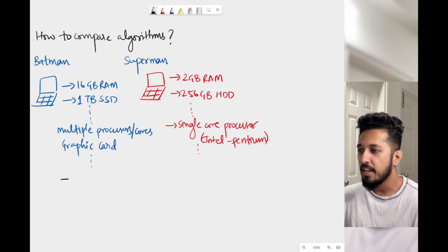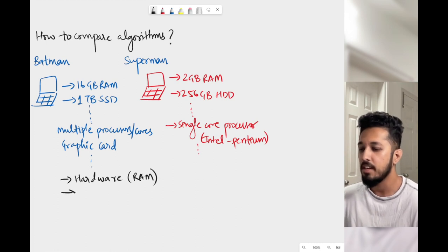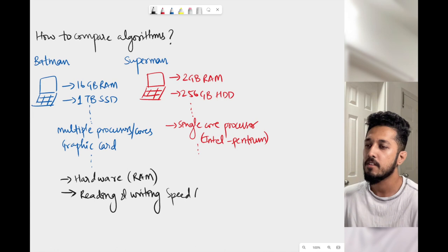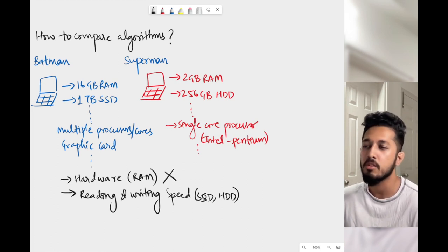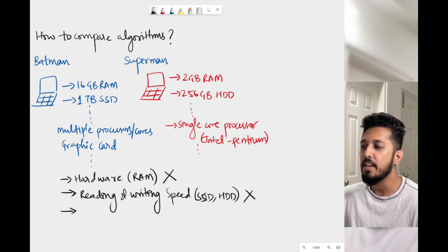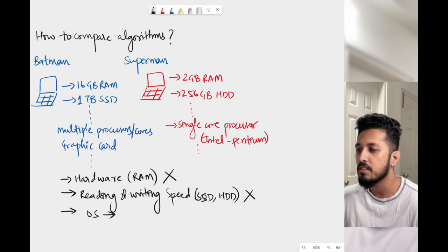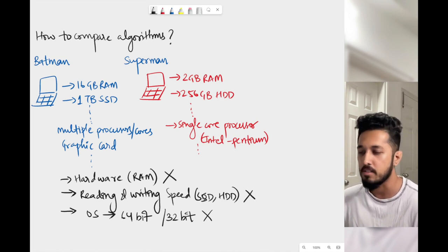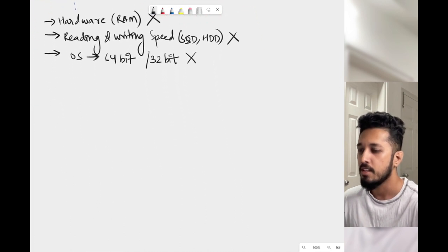Batman had better hardware — higher RAM, an SSD versus Superman's HDD — so reading and writing speed varies. Therefore, hardware cannot be a good metric for analyzing algorithms. Similarly, reading and writing speed is not a good metric. They might also have different operating systems: Batman using a 64-bit OS and Superman using a 32-bit OS. So these cannot be good metrics for analyzing algorithm performance.